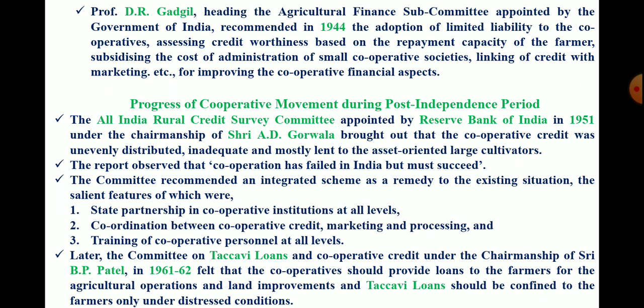The salient features of the Gorwala Committee's integrated scheme included: first, state partnership in cooperative institutions at all levels; second, coordination between cooperative credit, marketing, and processing societies; and third, training of cooperative personnel at all levels. These were the recommendations to overcome the existing situation.